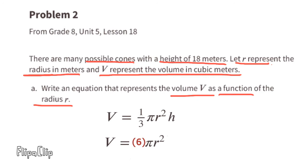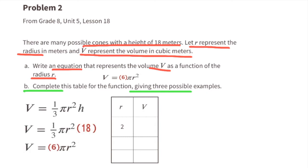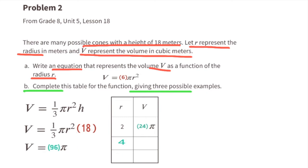Part b: complete the table giving three possible examples using V = 6πr². If the radius is 2, substitute r = 2: V = 6 × π × 2² = 6 × π × 4 = 24π. When the radius is 2, the volume is 24π. For the next one, use r = 4: V = 6 × π × 4² = 6 × π × 16 = 96π. When the radius is 4, the volume is 96π.